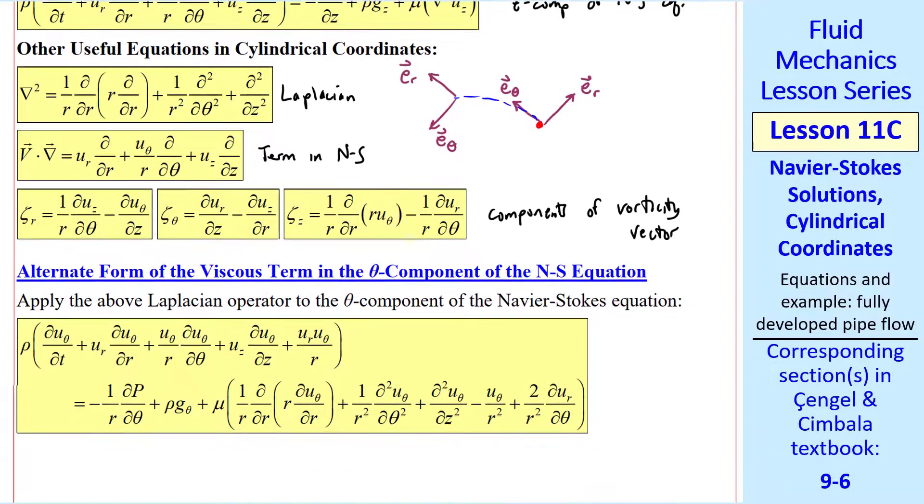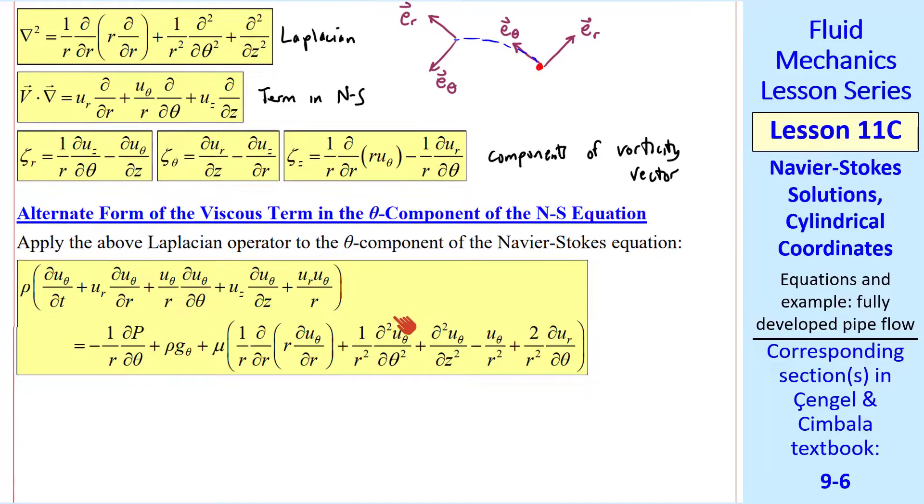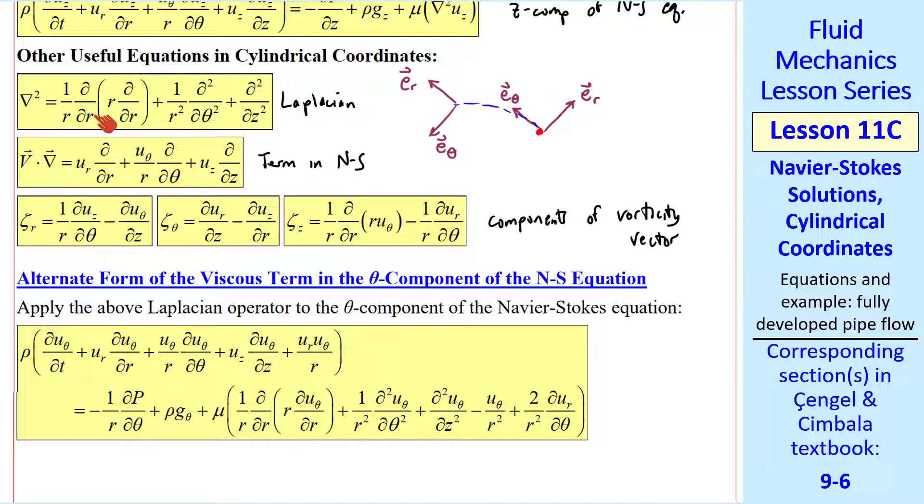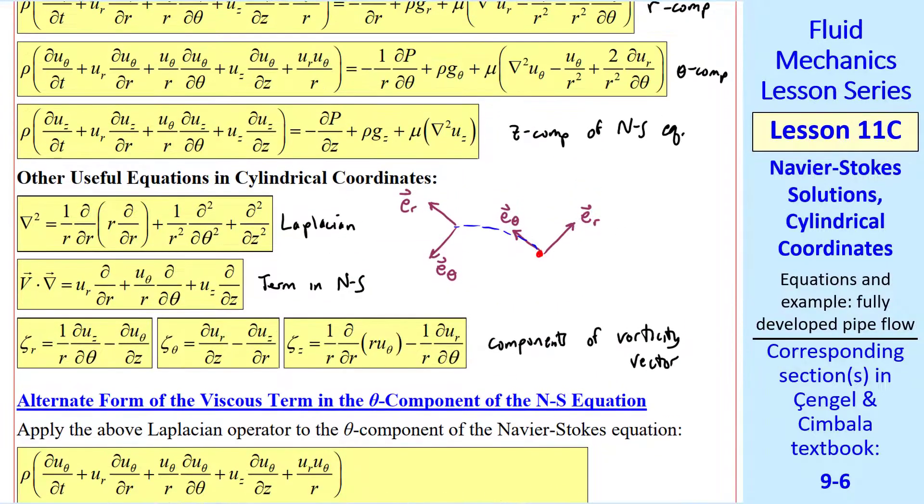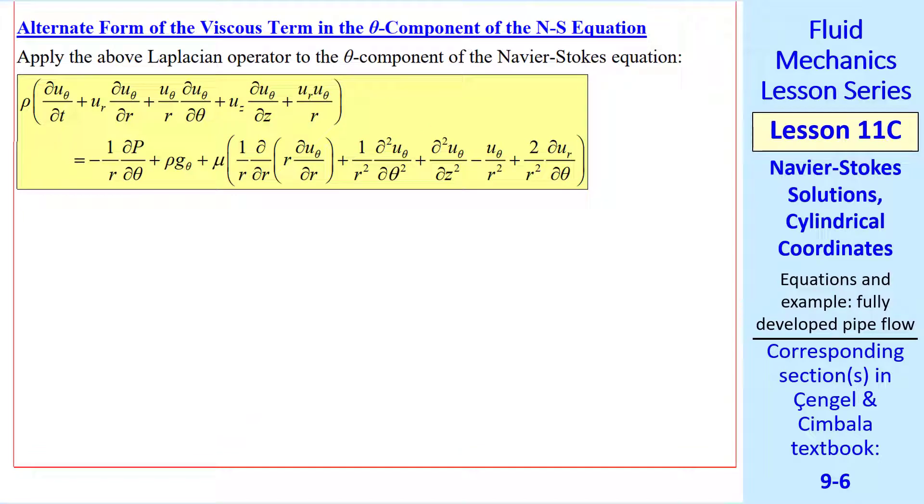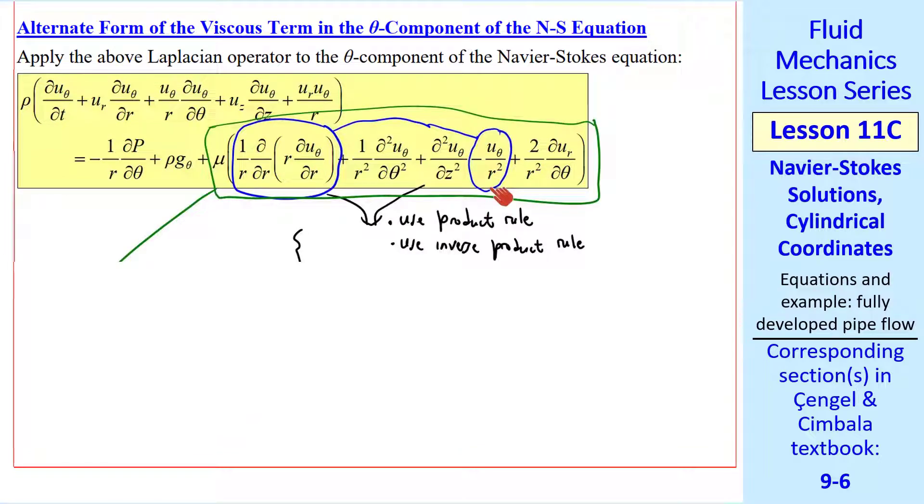Before I do an example, I want to talk about an alternate form of the viscous term in the theta component of the Navier-Stokes equation. What I did was take this Laplacian operator and plug it into the theta component of Navier-Stokes in this term, and just expand it out. And the viscous terms now include all of these terms. Sometimes we'll solve problems directly with this version of the equation. But there's an alternate form. We combine these two terms. We use the product rule to split this term up. Then we use the inverse product rule to combine these terms.